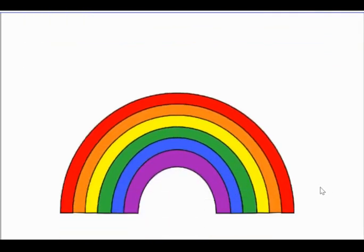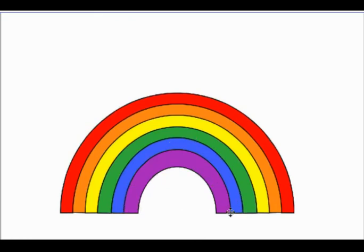Here's a rainbow. A rainbow has an arch shape. It curves up and down. People call it a rainbow because it appears after the rain, shaped kind of like a bow.